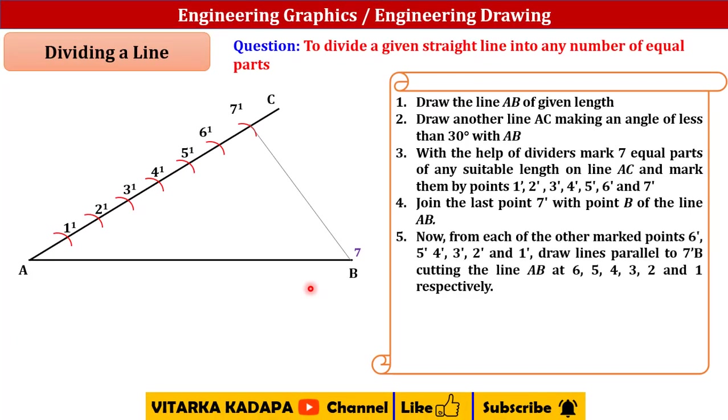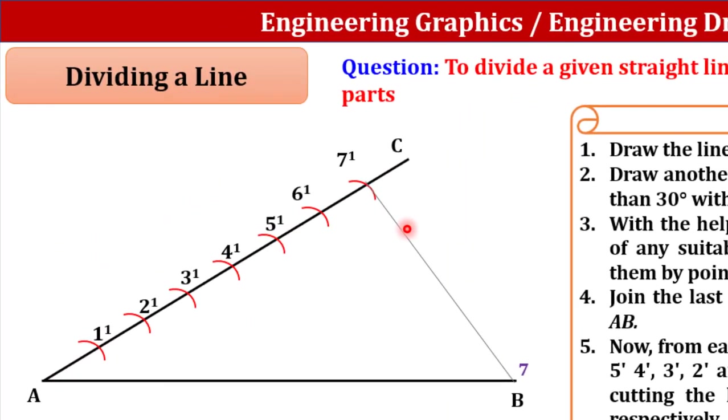Similarly do it for 6'. Place the drafter parallel to this one, bring it near to the 6' point, draw a line, you will get point 6. Similarly place the drafter parallel to this line, bring it to 5', draw a line to get point 5, 4' to point 4, 3' to point 3, 2' to point 2, 1' to point 1. That way you will get 7 points on this particular line.